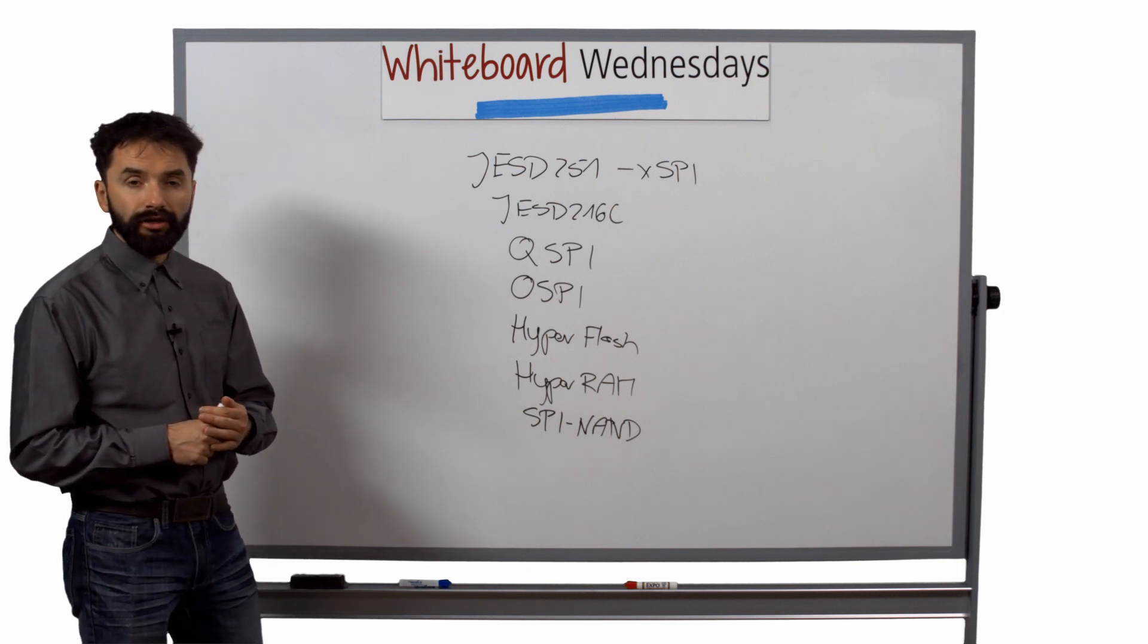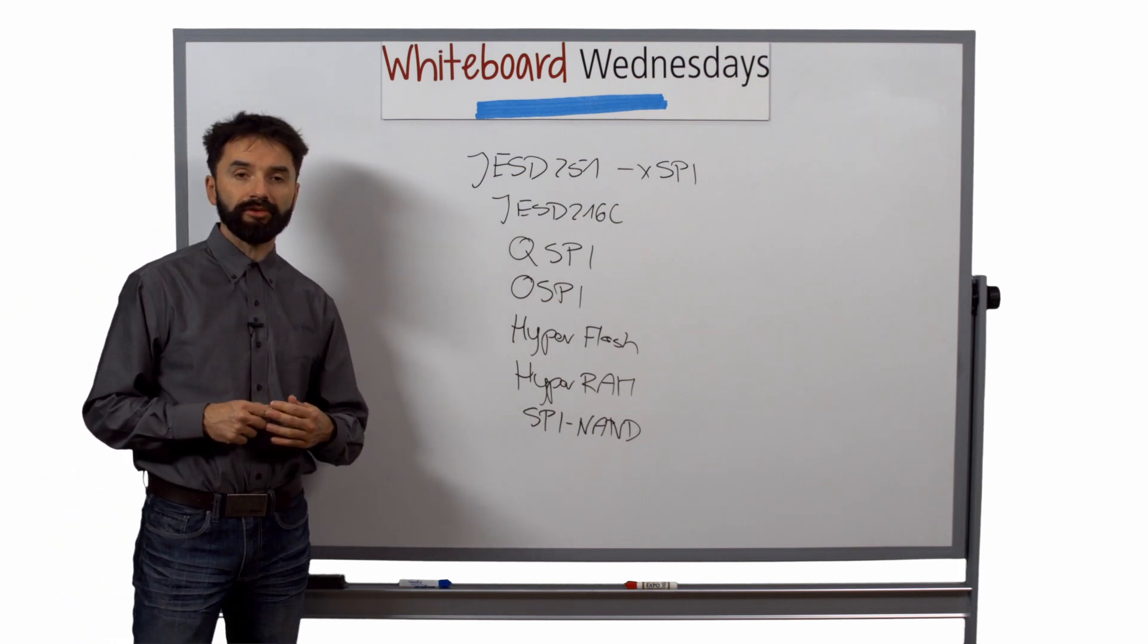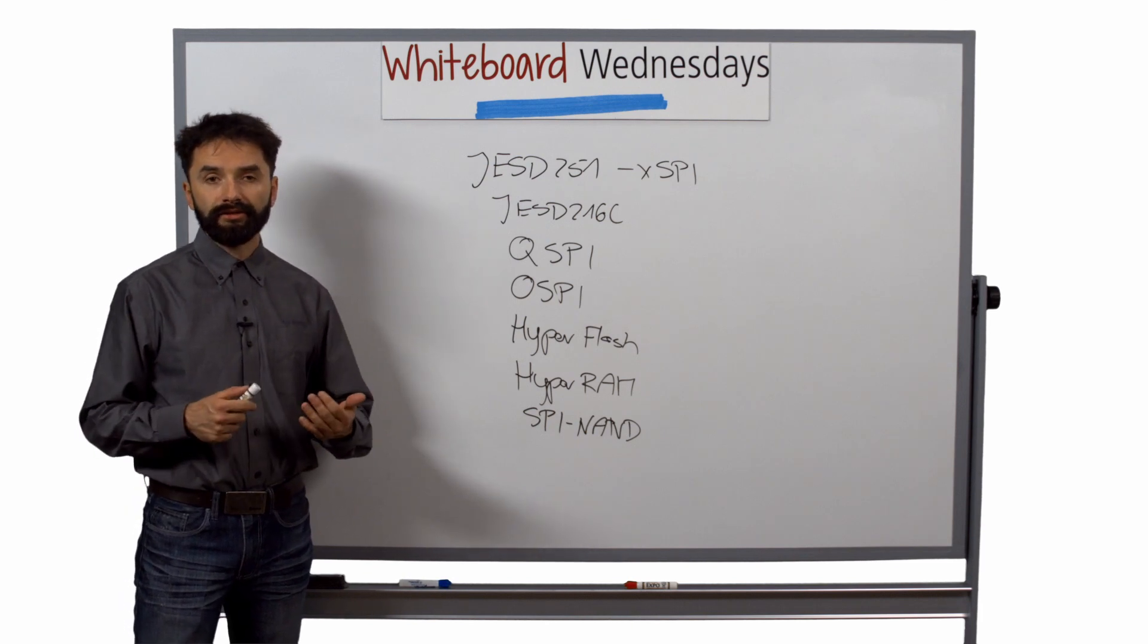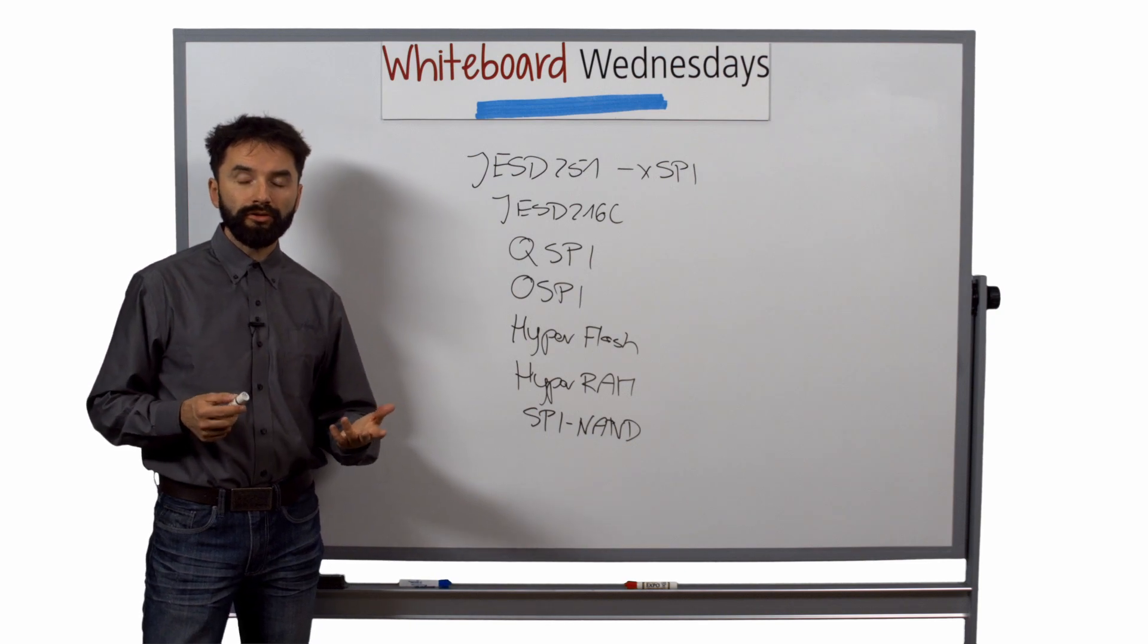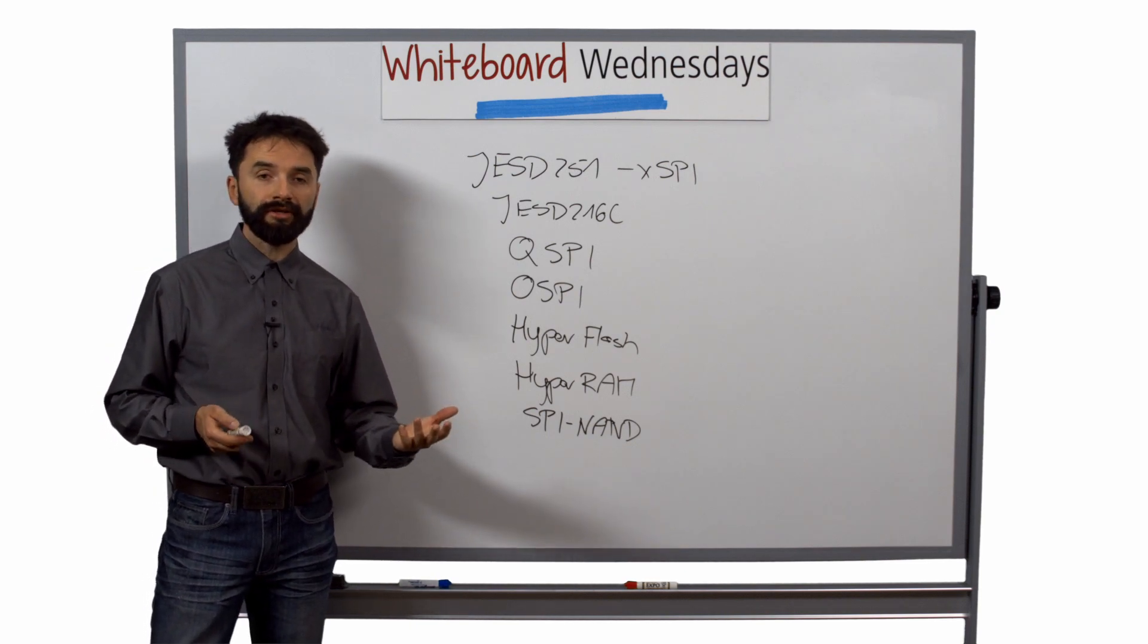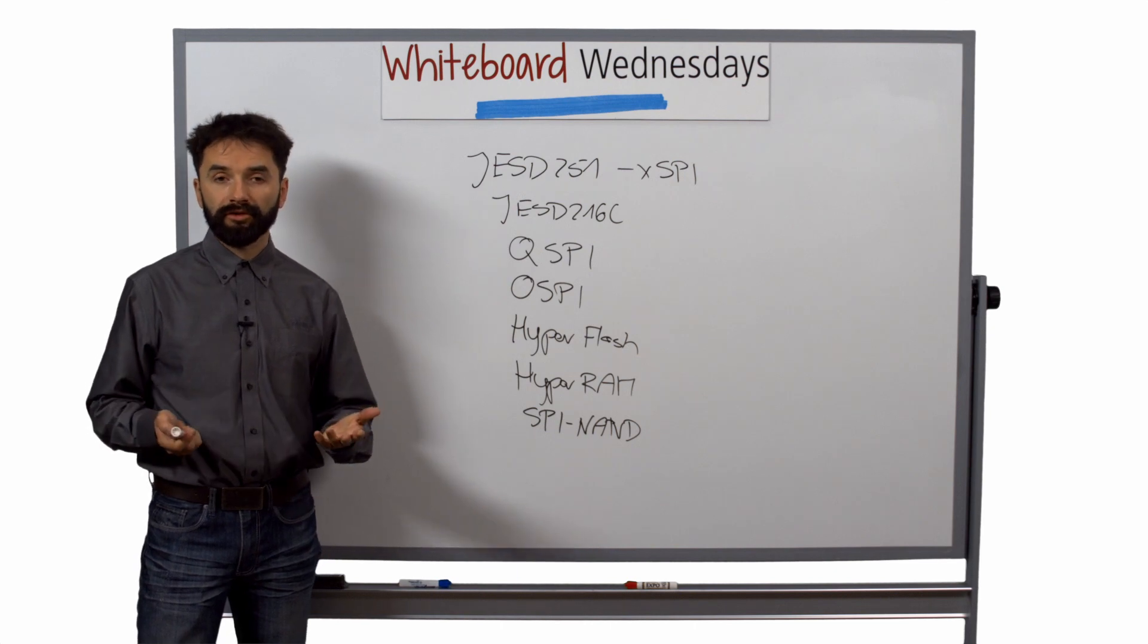Cadence is working closely with XSPI vendors like Adesto, Macronix, Cypress, and Micron to ensure interoperability of our XSPI IP with their memories.